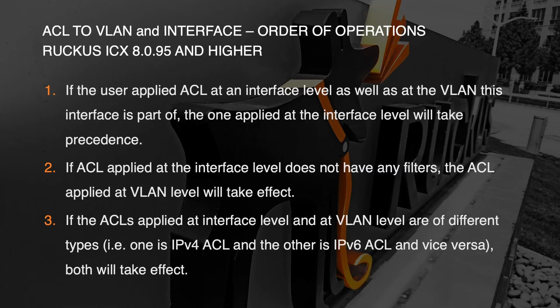And number three: if the ACLs applied at the interface level and at the VLAN level are of different types — so one is a V4 ACL and one is a V6 ACL or vice versa — then both will take effect because they don't overlap.